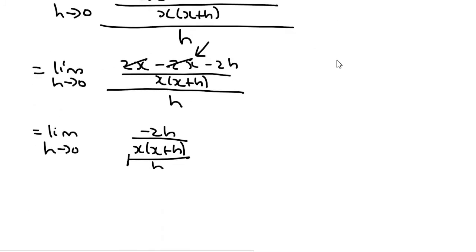So now we have a fraction on top of a fraction. And because we can think of this h as h over 1, now we can do that whole flipping and timesing thing. So you can, I'm just going to write it over here. Usually you would write it underneath. That's going to become minus 2h over x, x plus h, multiplied by 1 over h.